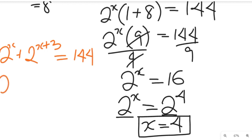So 2 to the power of 4 plus 2 to the power of 4 plus 3, that's 2 to the power of 4 plus 2 to the power of 7. Let's add that together.